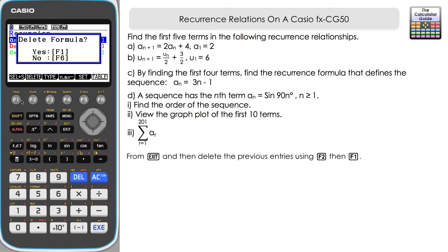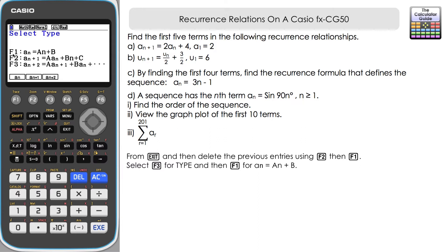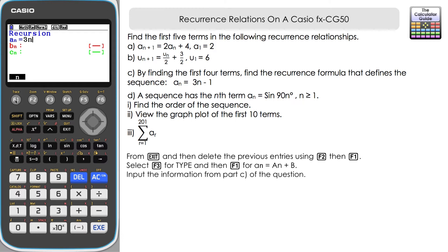We're going to change the input from A_(n+1). Press F3 for Type — you can see the different types of relationships available. We want F1, the top type: A_n = A_n + B. Press F1 to select that. Then navigate right and input 3n − 1 as our nth term.